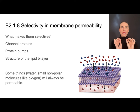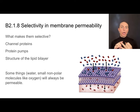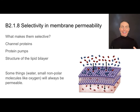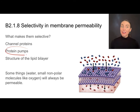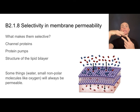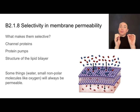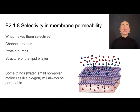To sum up: membranes must be selectively permeable. Some things like oxygen and water are always at least somewhat permeable, but the cell needs to control what goes in and out. It can manufacture or not manufacture certain channel proteins, or open and close them. It can choose to manufacture certain protein pumps. The structure of the lipid bilayer and its hydrophobic tails naturally prevents some molecules from passing through — so structural components all relate to the function of semi-permeability.